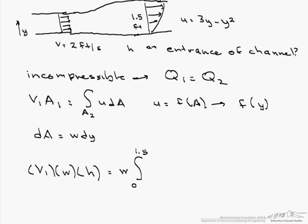and the integral from 0 to 1.5, because that is the height of that downstream channel, 3y minus y squared dy.